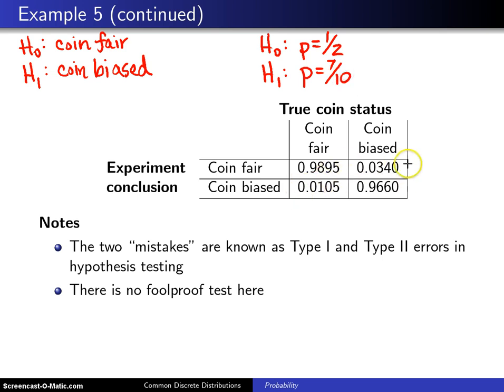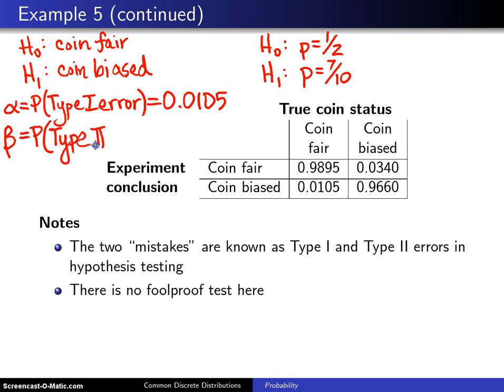Now, these two probabilities here, I'll go ahead and write those using statistical jargon. Alpha is the probability of Type I error. And that probability we have calculated here as 0.0105. And beta is the probability of Type II error. And in this particular case, we calculated that as 0.0340.